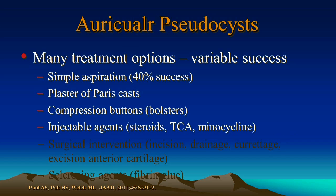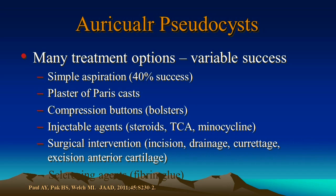Injectable agents such as steroids, trichloroacetic acid, and minocycline have been used, and surgical intervention to include incision, drainage, curettage, and actual excision of the anterior cartilage have been used with variable success. Sclerosing agents such as fibrin glue have also been utilized. It should also be noted that trichloroacetic acid and minocycline are actually sclerosing agents since they're very irritating to deep tissues.